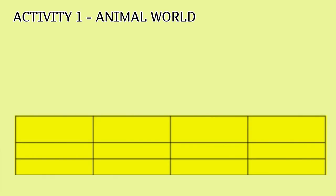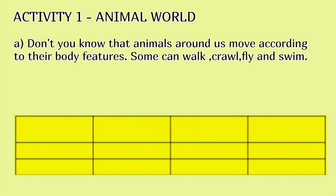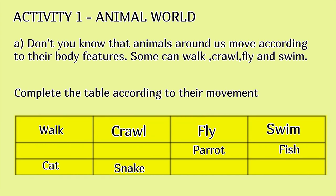Activity 1: Animal World. Don't you know that animals around us move according to their body features? Some can walk, crawl, fly and swim. Complete the table according to their movement.